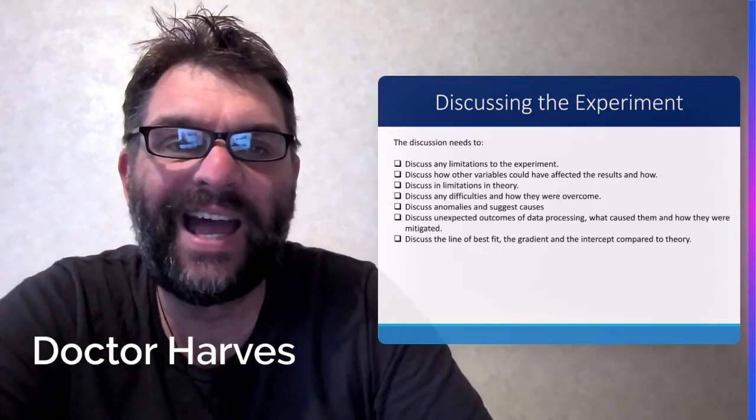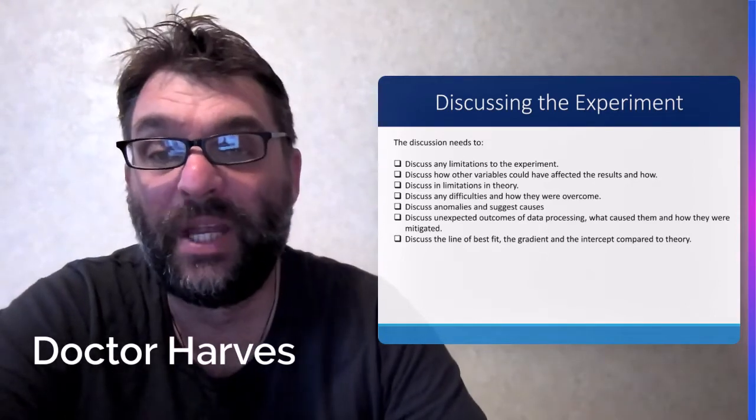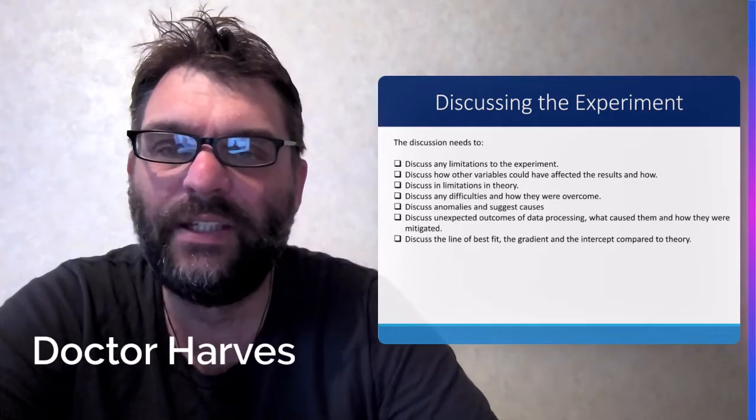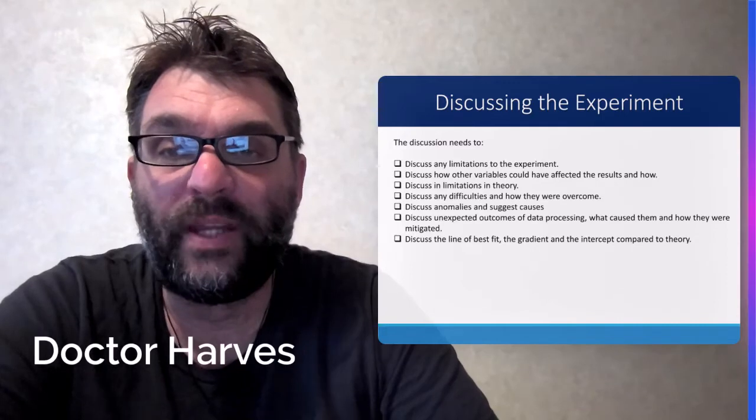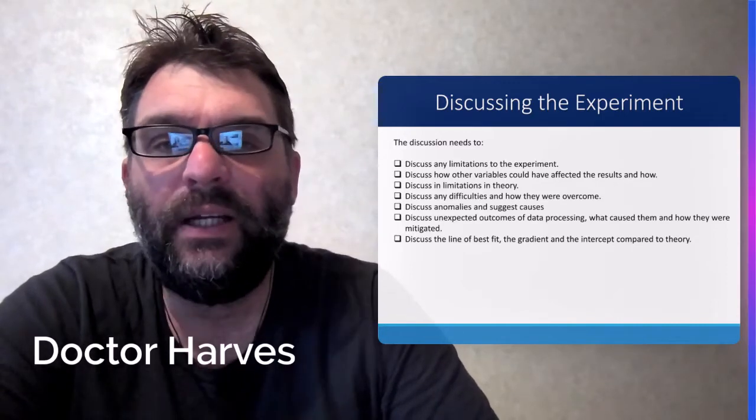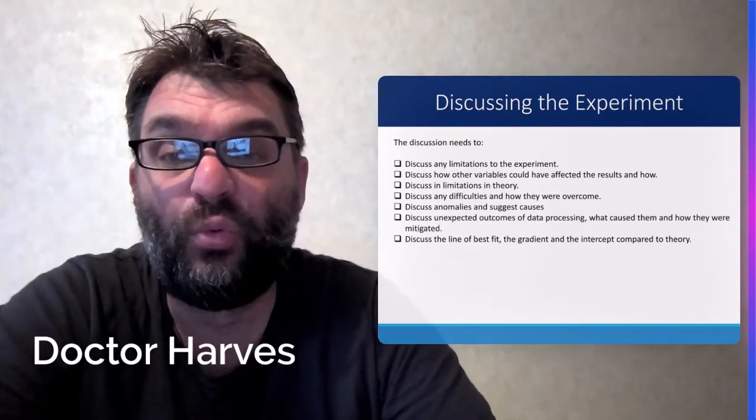Discuss any difficulties and how they were overcome. So there can be difficulties in the method. So maybe to adjust the method. Difficulties associated with the equipment that you're using to measure, or the equipment that you're having to measure, and how you overcame these and how you might overcome them in the future if you redid the experiment.